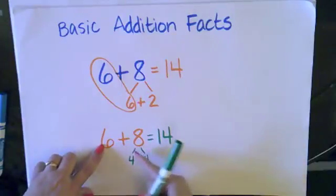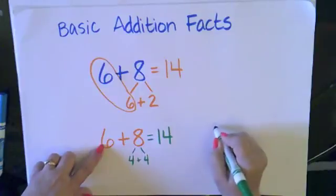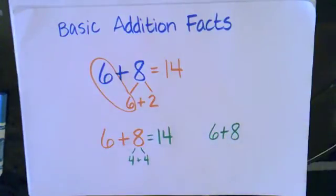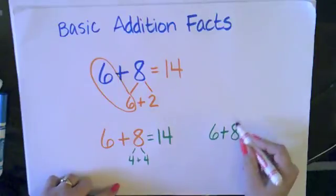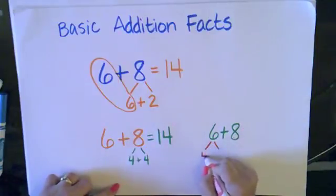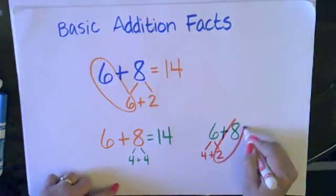So the last way I'm going to show you is if we looked at the 8 and made the 8 a friendly 10. So again, I'll rewrite 6 plus 8. And this time, we'll break apart the 6. I know that I need 2 more to make 10. So I can break apart my 6 into 4 plus 2. And here, I just made my friendly 10.